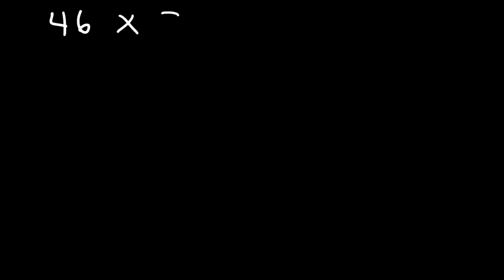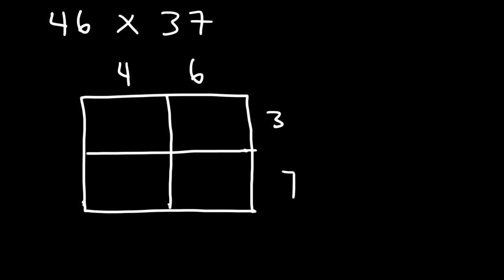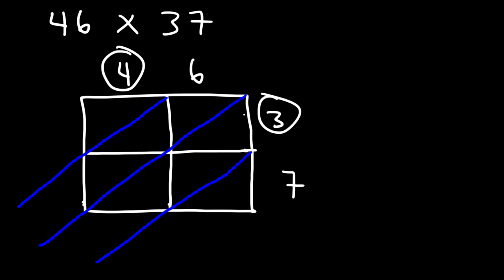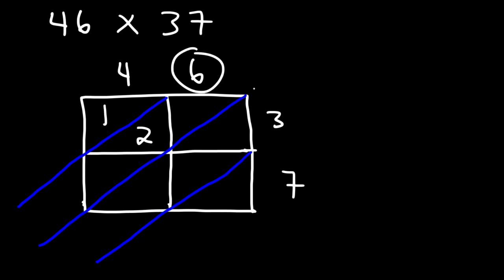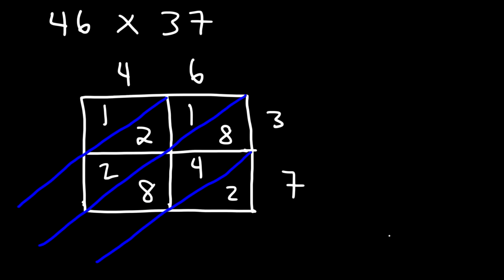For practice, let's try another example multiplying a two-digit number by another two-digit number — 46 by 37. Feel free to pause and work on it. We need two columns and two rows. Write 4 and 6 on top and 3 and 7 on the right, then draw the diagonals. 4 times 3 is 12, write 1 and 2. 6 times 3 is 18, write 1 and 8. 6 times 7 is 42, write 4 and 2.